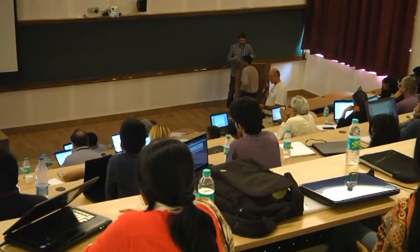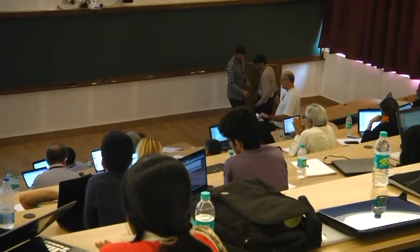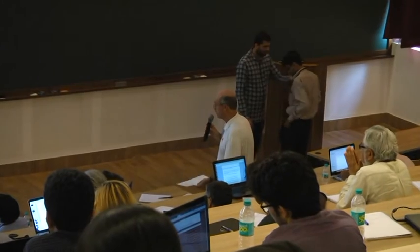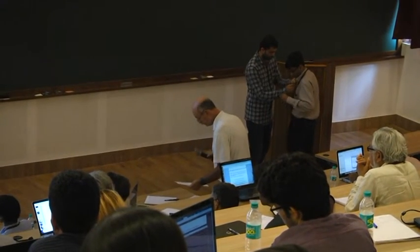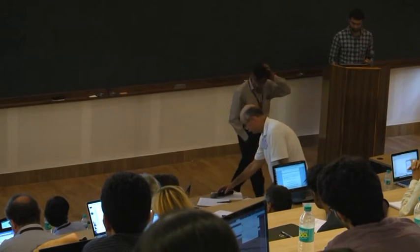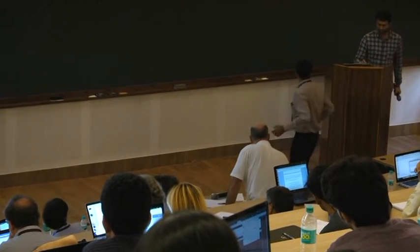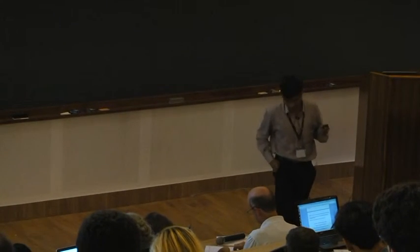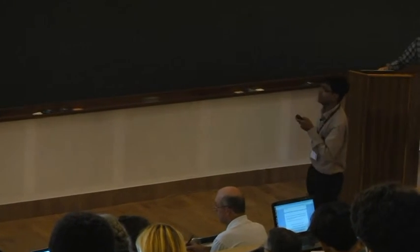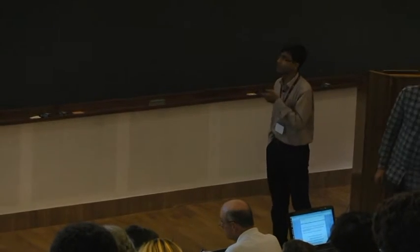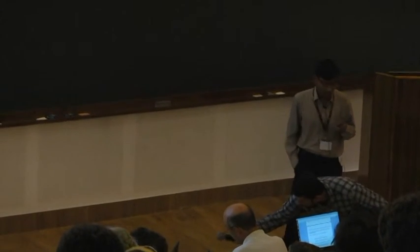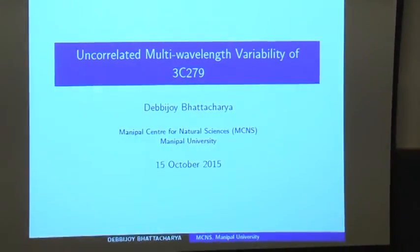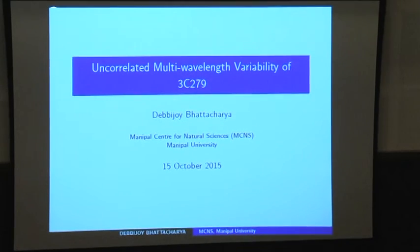Our next speaker is Debajoy Bhattacharya, who will talk about uncorrelated monthly wavelength variability of 3C279. I will extend my topic a little: part of the time I will spend on the short-term variability of 3C279, and then I will talk about something not discussed here at all — using Fermi to see if we can detect any long-term variability in these kinds of sources.